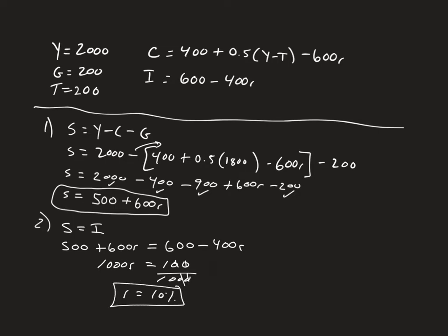So that was the first two parts of this question. The next is to solve for the level of savings and investment. So what is the level of savings and investment? Well, we know it's at equilibrium, so we just plug it into this function. We plug that 0.1 into savings and investment.